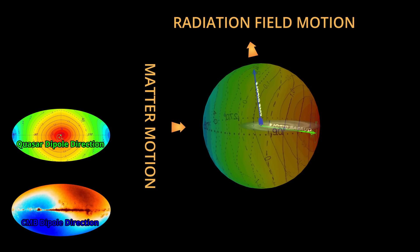It's tempting to imagine that both dipoles could be motion, one relative to matter, the other relative to a radiation field. But that idea quickly collapses. If the CMB dipole were a true velocity, its imprint would also appear in quasar spectra. It doesn't.